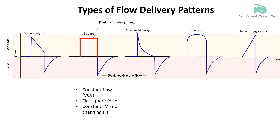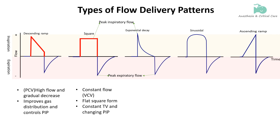The descending or decelerating flow waveform, seen in pressure-controlled ventilation and some volume modes, starts with a high flow rate that gradually decreases during inspiration. This flow pattern improves gas distribution and reduces peak pressures.